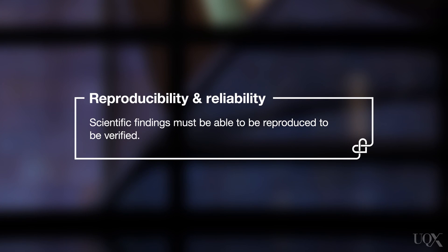Reproducibility and reliability. One of the defining characteristics of science is that findings are published in peer-reviewed journals. This allows other scientists to verify any claims, and also allows them to check if the methodologies employed are ones that produce credible evidence. Anecdotal evidence is not reproducible, nor are the circumstances of its origins controllable. As a consequence, anecdotes are not usually accepted as evidence.